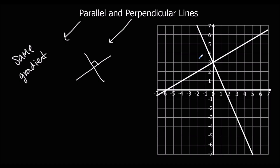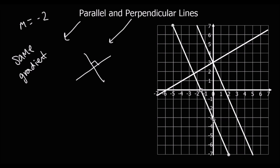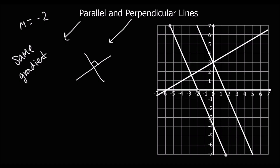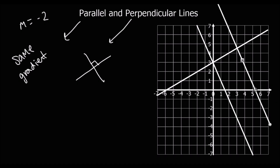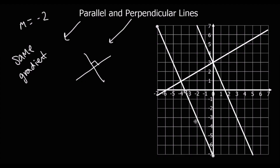So the original line here has got a gradient of — for every one it goes across, it goes down 2. So the original line has got a gradient of minus 2. Any parallel line is also going to have a gradient of minus 2. It can be anywhere on the graph, but as long as it's got a gradient of minus 2, it's going to be a parallel line. So let's draw it over there.